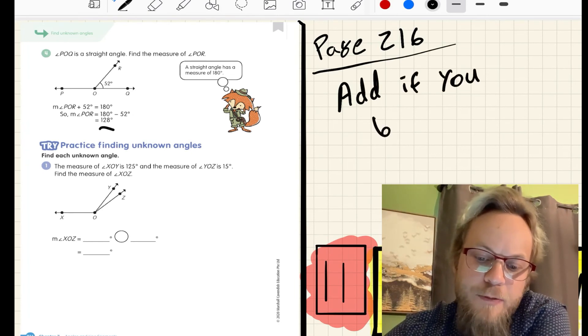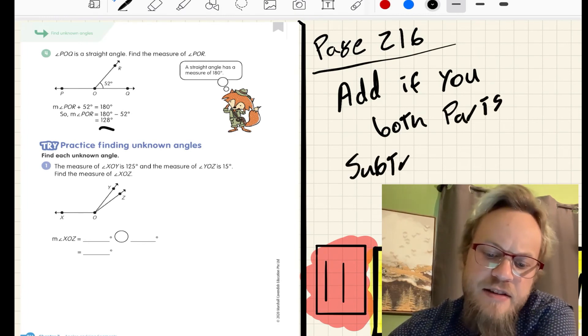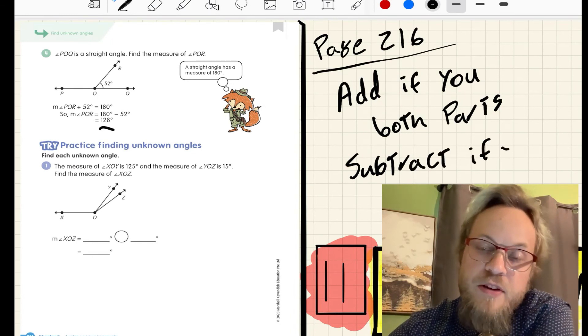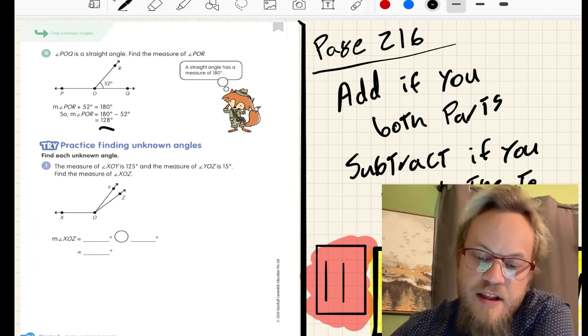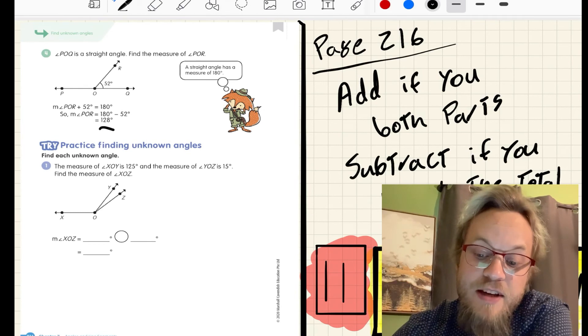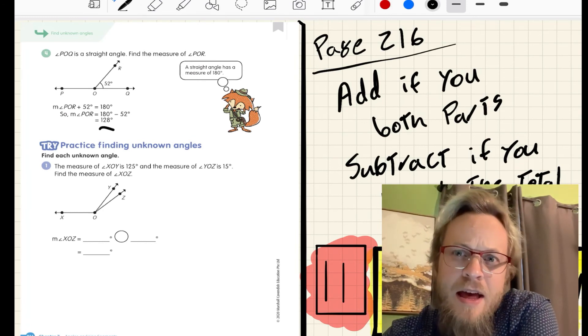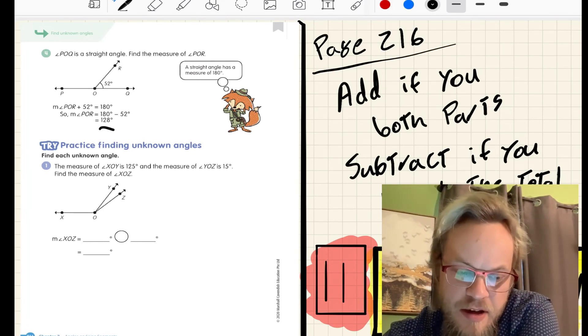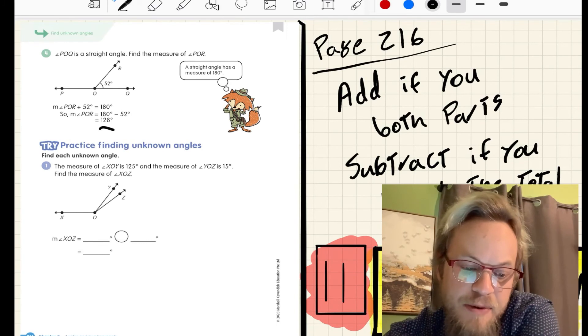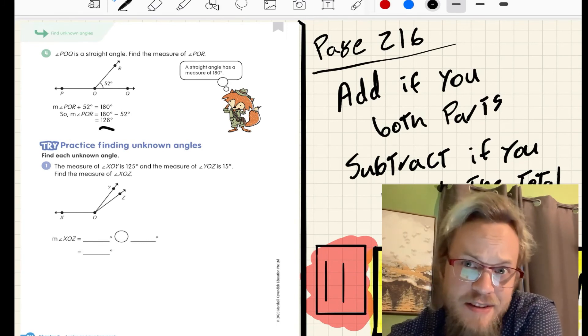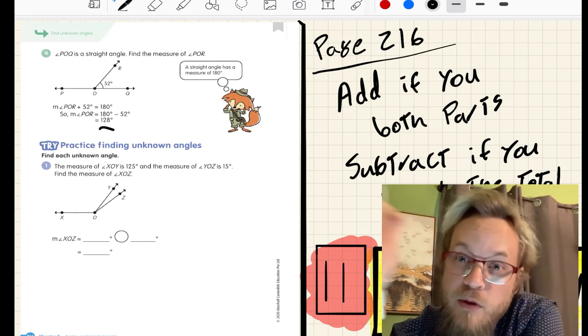or subtract if you know the total. A lot of what they'll do for the subtraction is they'll give you either a right angle, a straight angle, or a full 360-degree circle, and you just need to subtract from those parts. I want to give you a moment to try. This is page 216, problem number one. Take a moment to pause the video and try. Good.